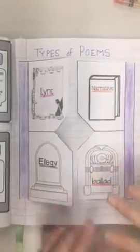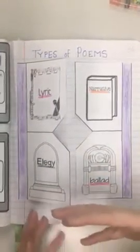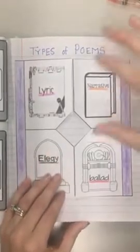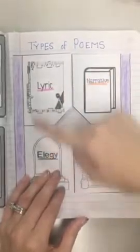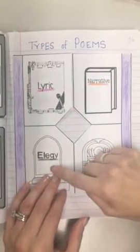So, the pages that we have here are really just going to be a reference for you. What you're going to have is three pages that look similar. All of them have a shutter fold with four different types of poems.